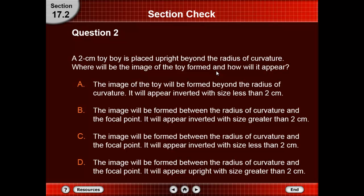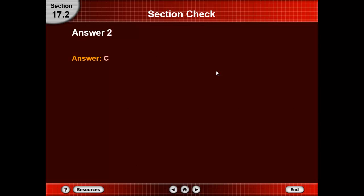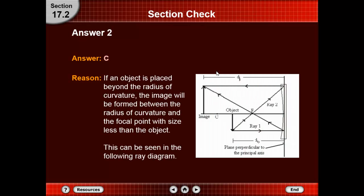Option D: the image will form between the radius of curvature and the focal point, appearing upright with size greater than 2. The answer is C. If an object is placed beyond the radius of curvature, the image will be formed between the radius of curvature and the focal point with a size less than the object. This can be seen in the following ray diagram.